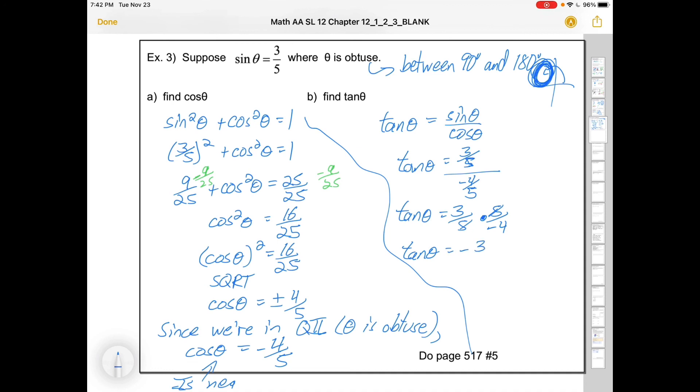And we should write it that way, negative three quarters, not three over negative four. Because we like to have positive denominators. There we go. We solved a little logic puzzle. We only knew sine, and now we know all three trig ratios because of the quadrants we're in and the identities we have to play with.